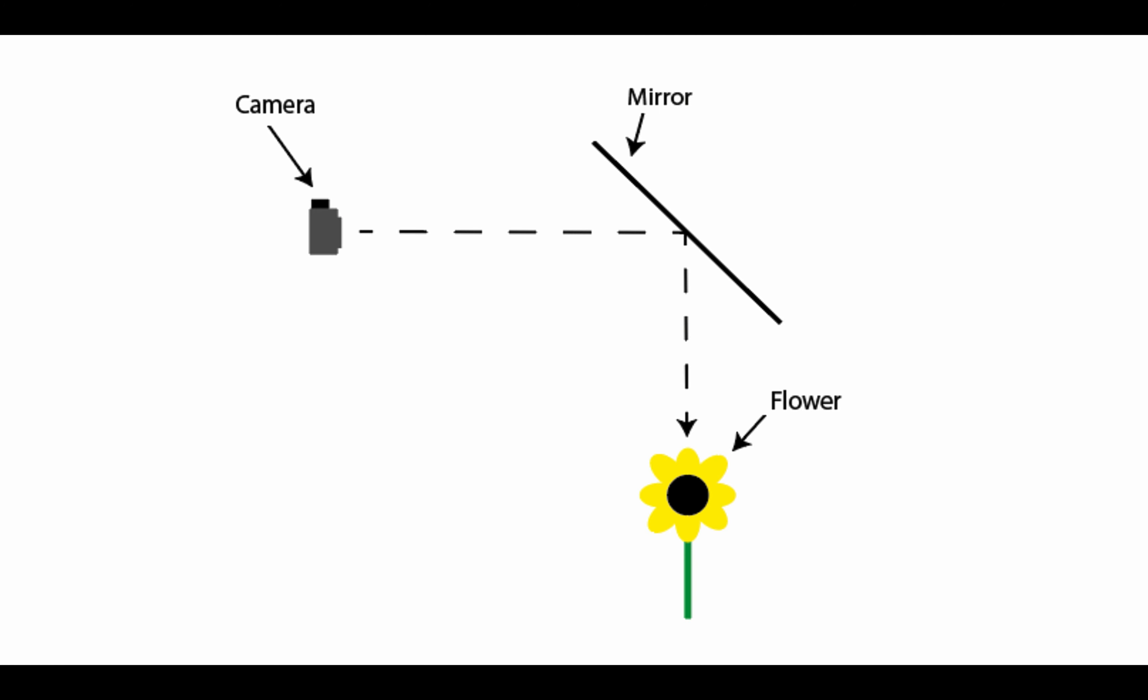You can set up a mirror and take the picture of the flower through the mirror. This achieves the same effect but is more complex. The same logic applies to algorithms. Two algorithms may produce the same output as per the specification, but one may do it more complexly and less efficiently than the other.